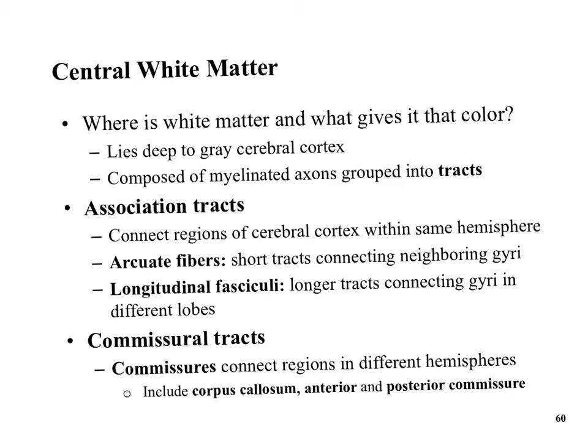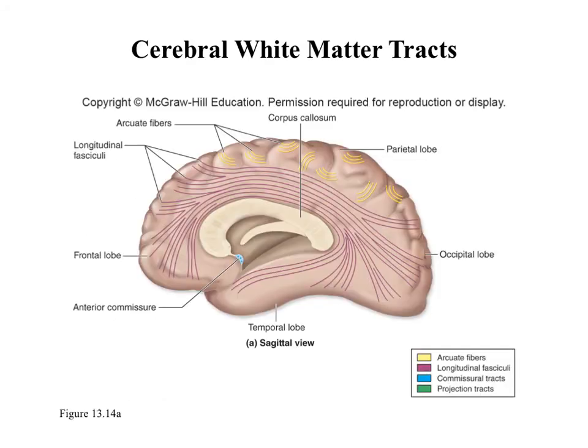Commissural tracks connect regions in different hemispheres — they go from left to right. We have a dominant and non-dominant hand, but we have to coordinate movements together. Coordinated movements like swinging a golf club or baseball bat require associating the motor cortexes on both sides. The corpus callosum is one large white area that allows connection of the left and right hemispheres, along with the anterior and posterior commissures.